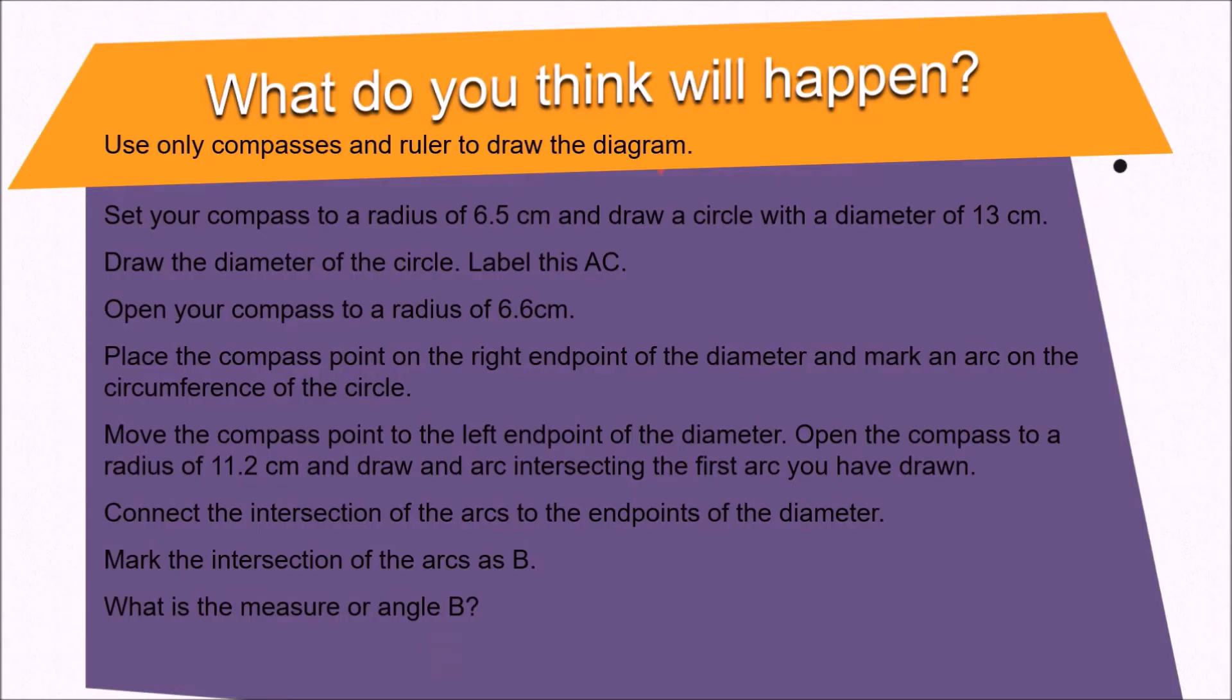Let's take a look at this next exercise. What do you think will happen? Do this exercise on an A4 sheet of paper. In here you will discover what type of triangle is inscribed in a circle when the diameter is one side of the triangle. Pause this video and follow each step carefully. Come back when you are done to check your work.